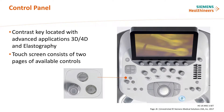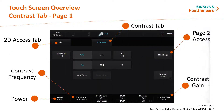To turn on the contrast software application, the key is located on the control panel in the advanced applications area on the left side of the panel. Once activated, the contrast key will illuminate blue. The contrast tab populates the touch screen adjacent to the 2D tab, which remains on screen and accessible while in contrast mode.